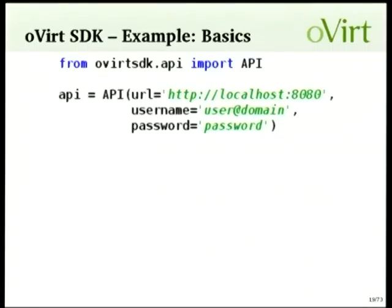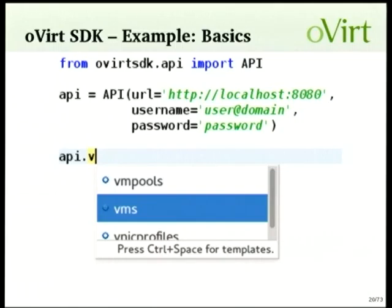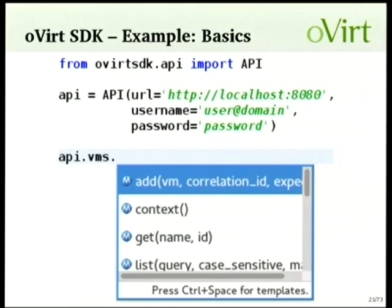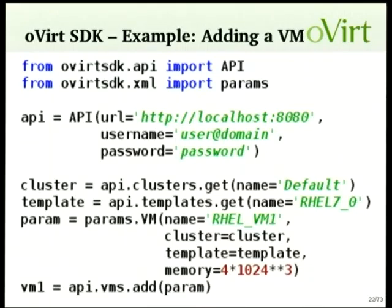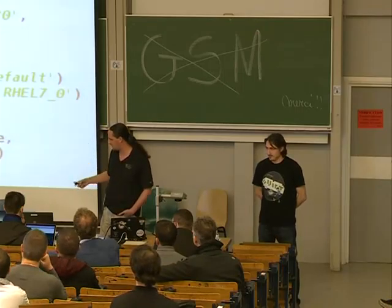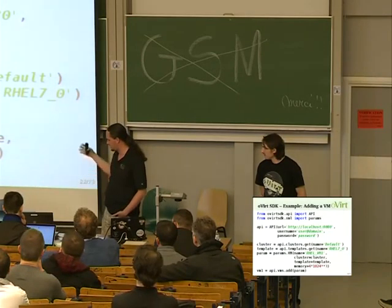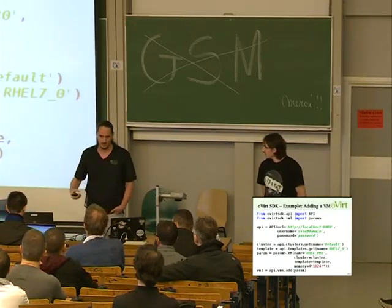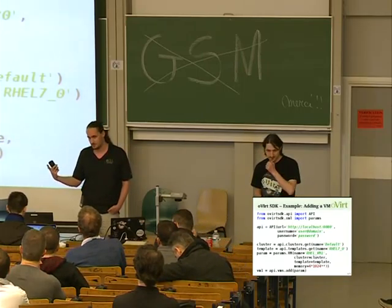In this Python SDK example, I import the API object, create a proxy giving a URL, username, and password, and on that proxy object I can list all available collections or actions — for example, calling VMs and seeing actions like add a new VM. To add a VM: import the API, create a proxy, get the cluster and template, create a VM parameter object with name, cluster, template, and memory amount, then call `api.vms.add()` and get back a VM object you can further act upon — like starting the VM, adding disks, network resources, or other devices.